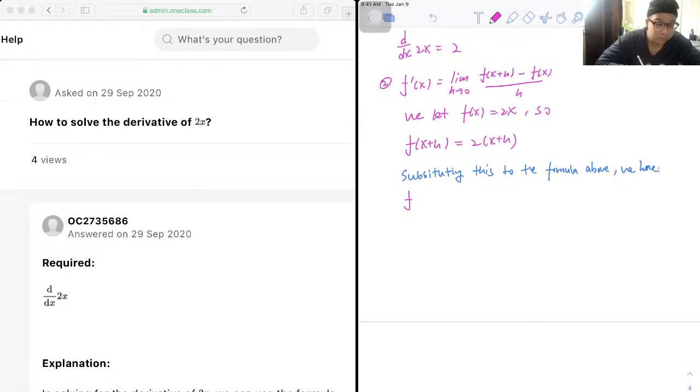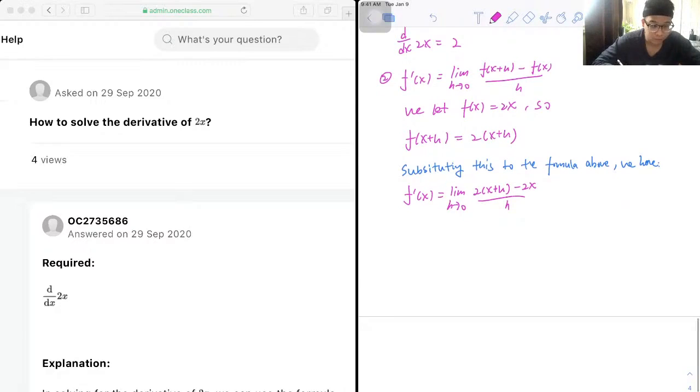We have the derivative of f(x) is equal to limit as h approaches 0 of 2 times (x+h) minus 2x over h.